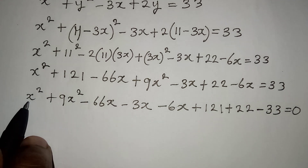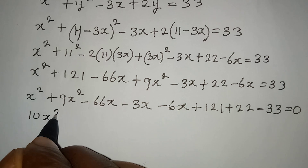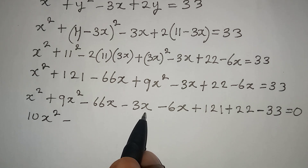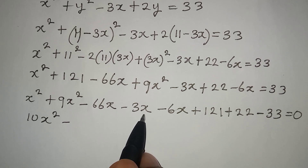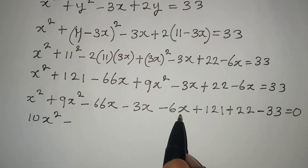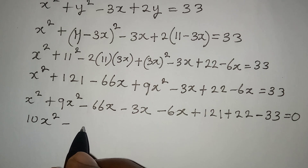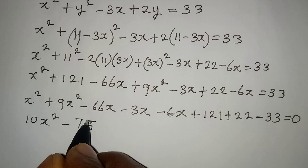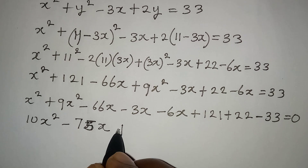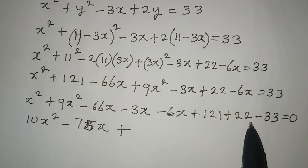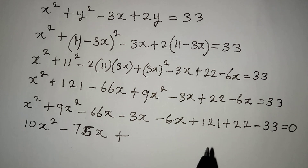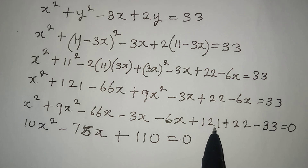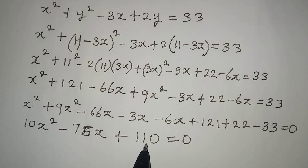So let's continue. x squared plus 9x squared gives us 10x squared. Then minus 66x minus 3x gives minus 69x, and minus 69x minus 6x gives minus 75x. Then 121 plus 22 minus 33 gives us 110. So we have 10x squared minus 75x plus 110 equals 0.